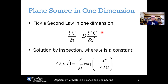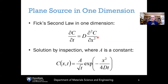Starting with a plane source in one dimension, this is Fick's second law in one spatial dimension x. This has a standard solution by inspection of a Gaussian form. The concentration c as a function of position x and time t is equal to some unknown constant A divided by the square root of time times this Gaussian factor — the exponential of minus x squared over 4Dt. Anytime you have e to the minus variable squared, that is a Gaussian format. We need to determine the value of this unknown constant A.